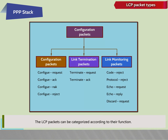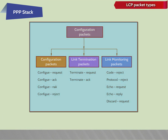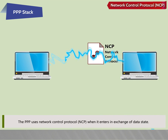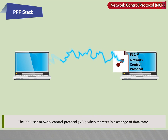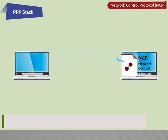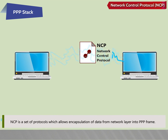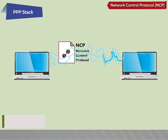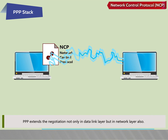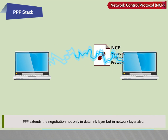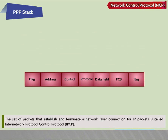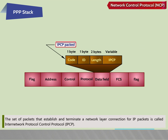LCP packets can be categorized according to their function. Network control protocol (NCP). PPP uses NCP when it enters the exchange of data state. NCP is a set of protocols which allows encapsulation of data from the network layer into a PPP frame. PPP extends negotiation not only in the data link layer but in the network layer also. The set of packets that establish and terminate a network layer connection for IP packets is called inter-network protocol control protocol (IPCP).